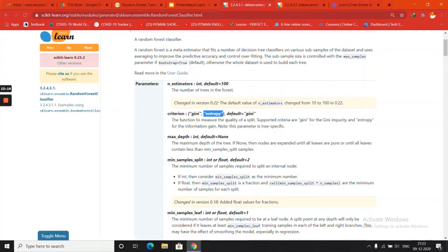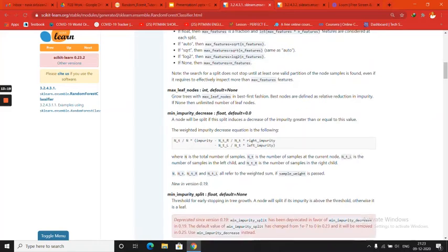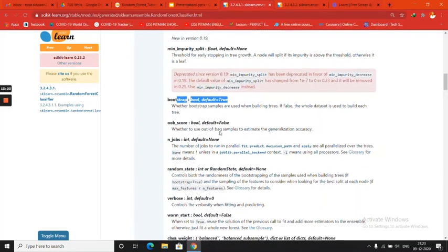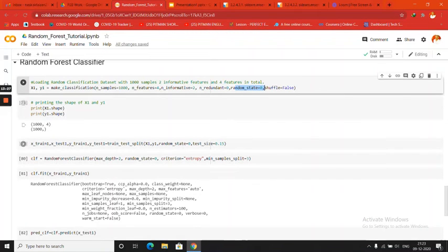And min_samples_split is again we have talked about. These are the basic features. These all you don't need generally, and bootstrap is always set to true. And random_state we already know. So this is the basic thing.